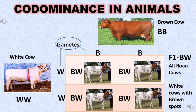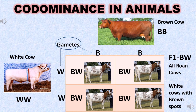Co-dominance in animals: the example is brown cows. In a cross between a brown cow (homozygous BB) and a white cow (homozygous WW), when we cross them we get all offspring that are white cows with brown spots, which is showing co-dominance.